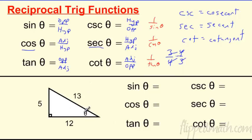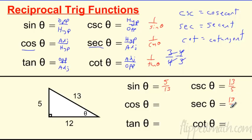How do we use these with a triangle? If sine of theta is 5 over 13, that's opposite over hypotenuse. The cosecant is just the flip: 13 over 5. Secant is the reciprocal of cosine, which is adjacent over hypotenuse, so flip it to get hypotenuse over adjacent. Tangent is opposite over adjacent — flip it for cotangent.